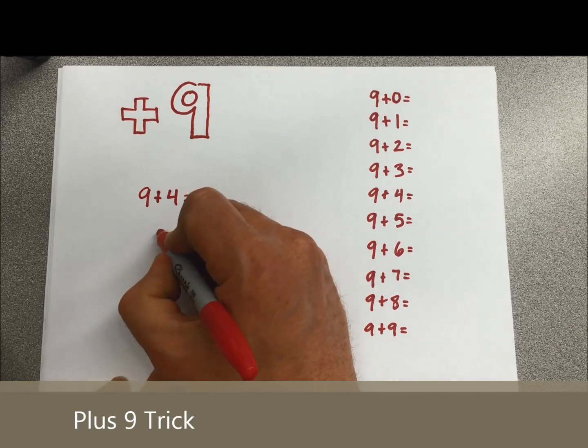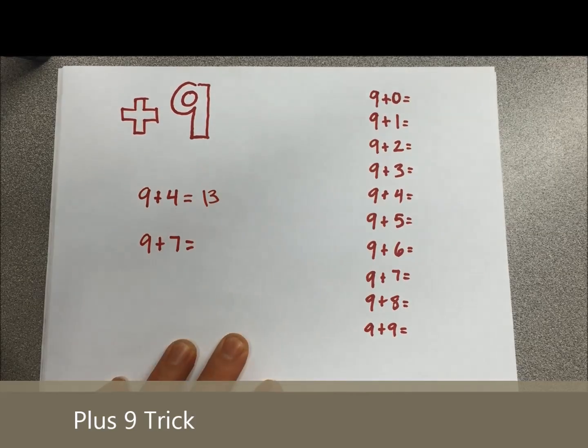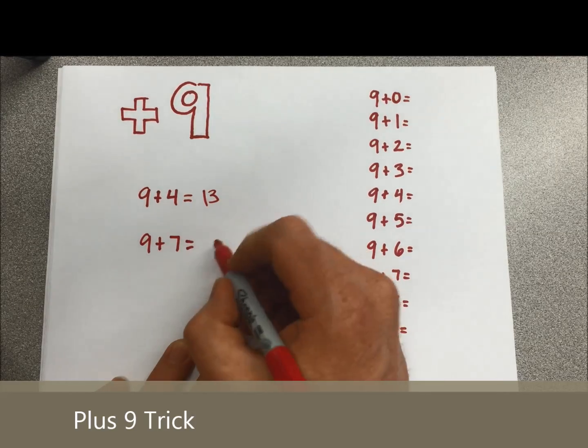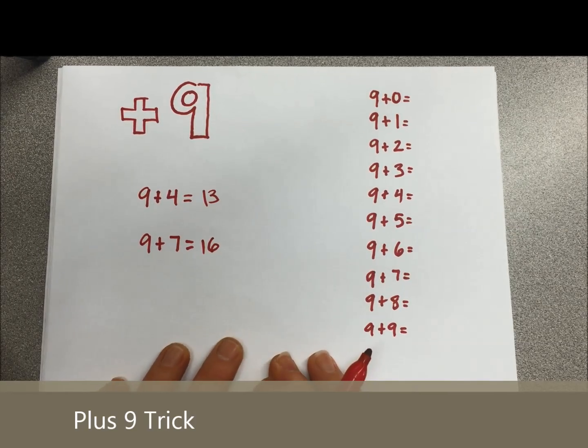Let's try another one. Let's start with 9 plus 7 equals. Drop down 1 from 7, that would be 6, slap a 1 in front, our answer is 16.